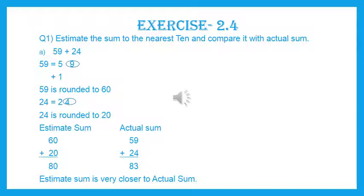Now let's start question 1: 59 plus 24. We have to estimate the sum to the nearest 10 and compare it with the actual sum. We need to find the estimate of both numbers. For 59, we check the 1's place — it is 9, which is greater than 5. So we add 1 to the 10's place: 5 becomes 6 and 9 becomes 0. So 59 is rounded to 60.